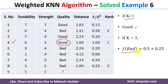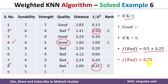When k=3, we calculate f(bad) and f(good) by summing the inverse square distances of neighbors belonging to each class. Among the three nearest neighbors (examples 4, 2, 8), examples 2 and 8 are 'bad', so f(bad) = 0.50 + 0.25 = 0.75. Example 4 is 'good', so f(good) = 1.0. Since f(good) > f(bad), the new example is classified as 'good'.